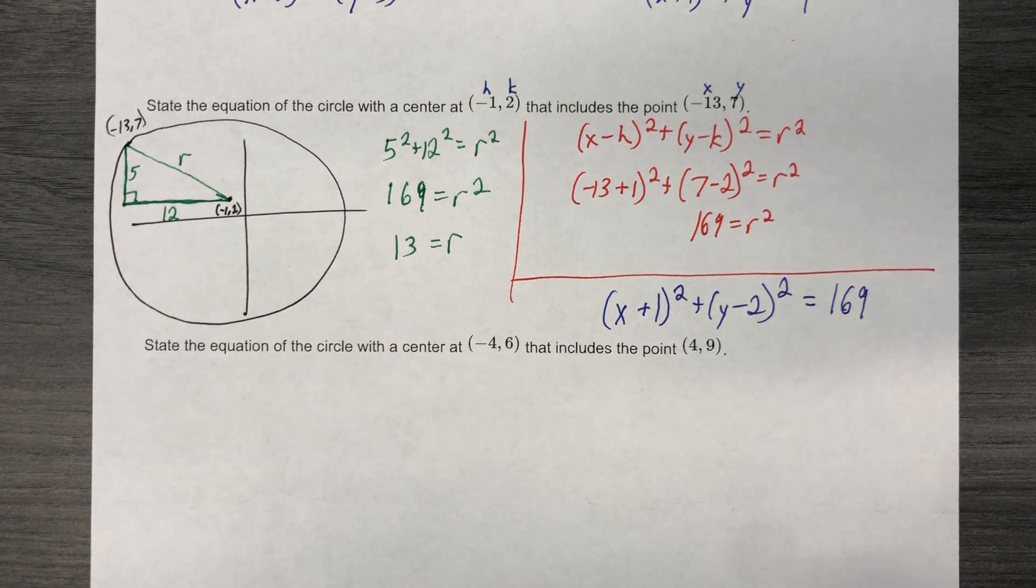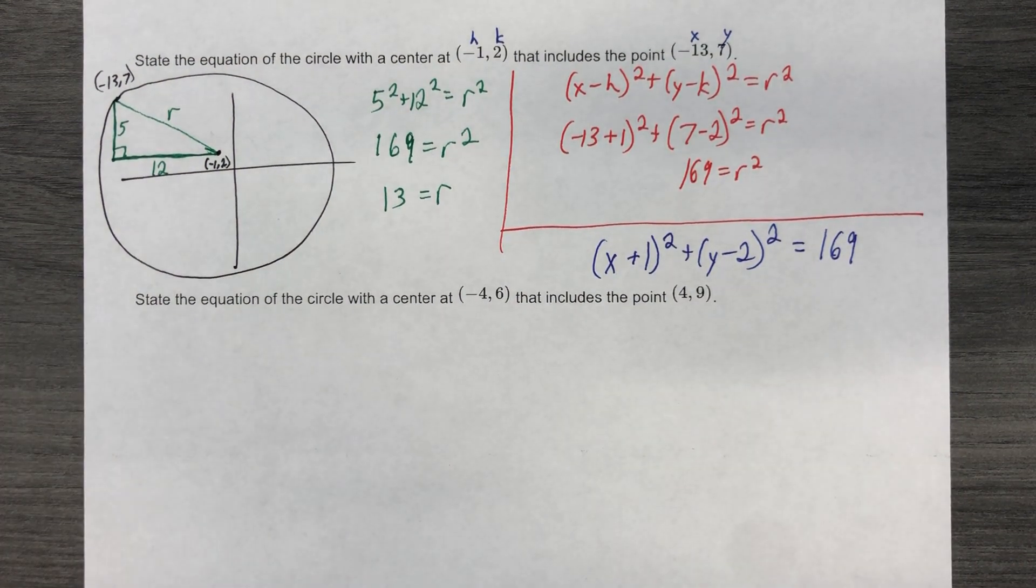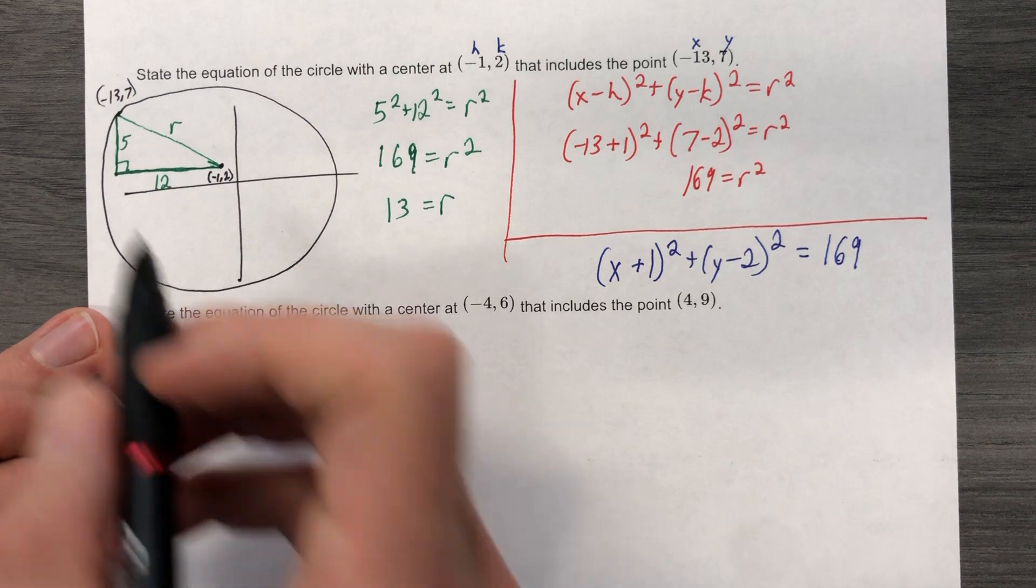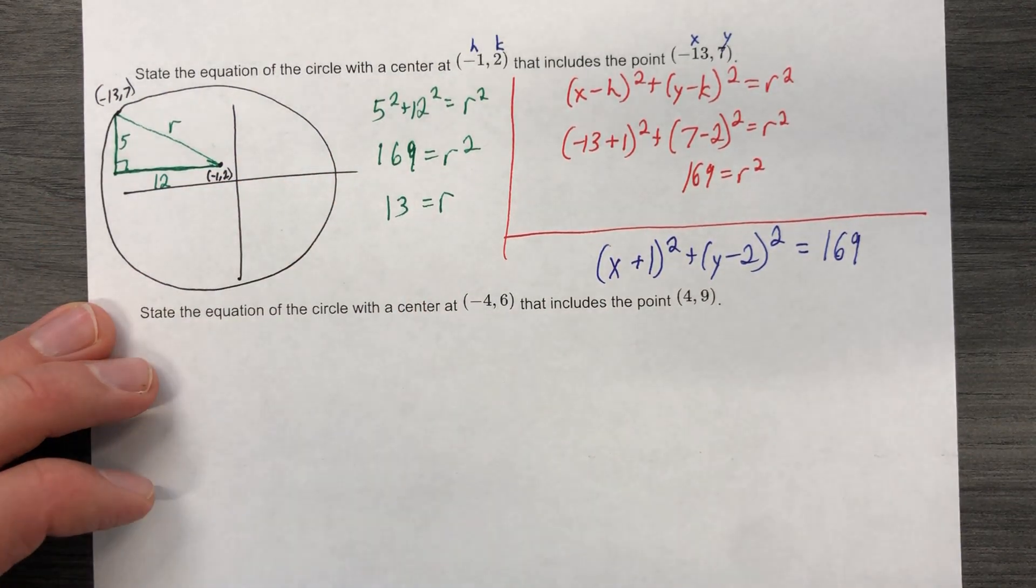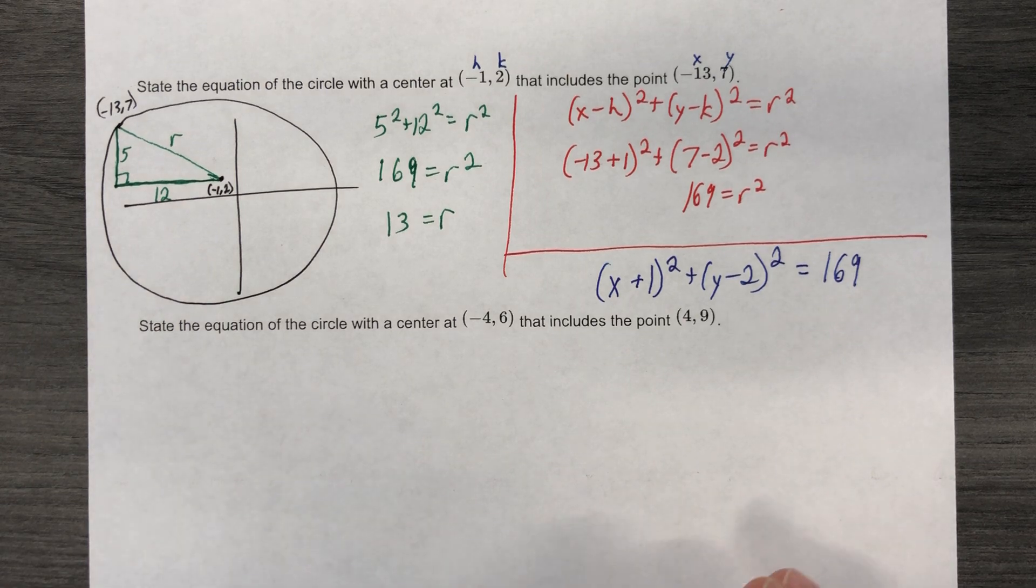Next problem, I'll do both methods as well. Take your pick. It doesn't matter. I don't have much of a preference. If I'm given a graph, I just find it easier to count. If I'm not given a graph, I find it easier to do this. It's just my opinion.